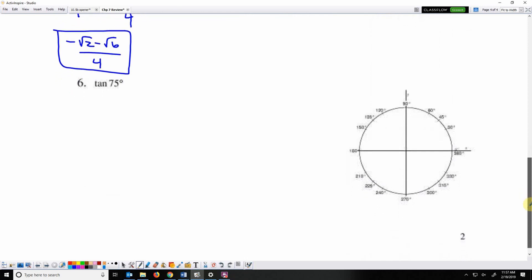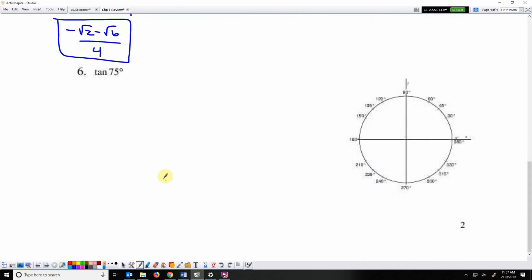And then tangent 75. One example of how to make 75 is 45 plus 30. So 45 degrees is here, 30 is here.